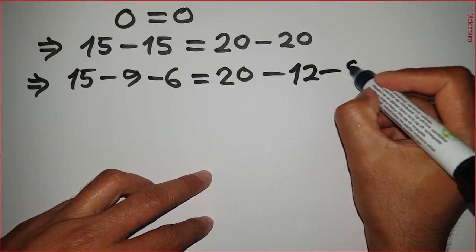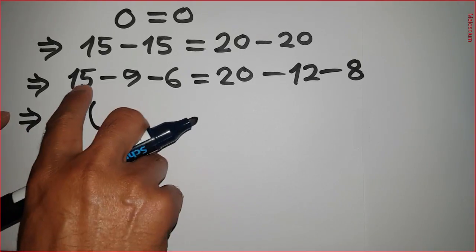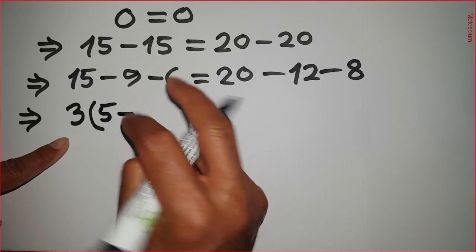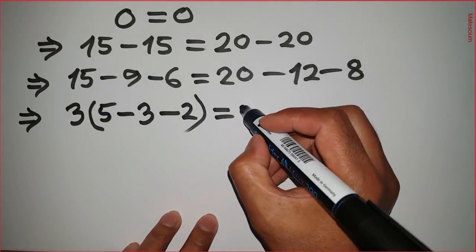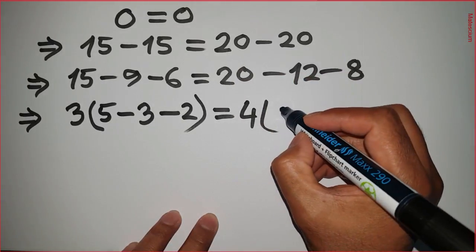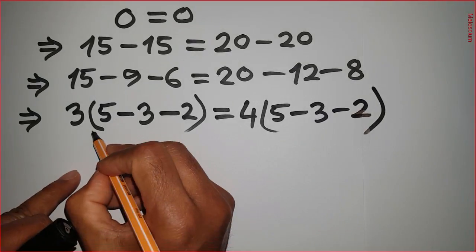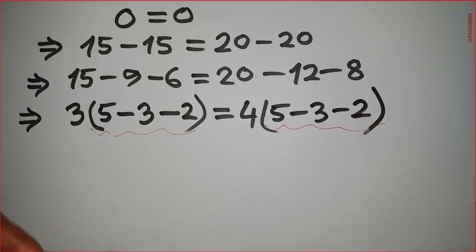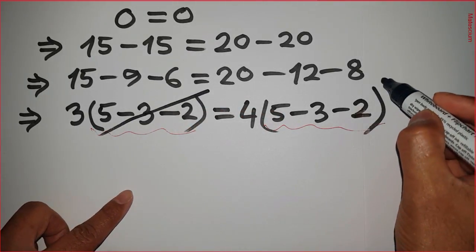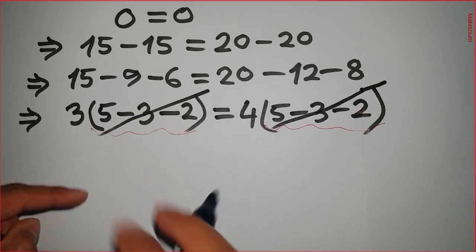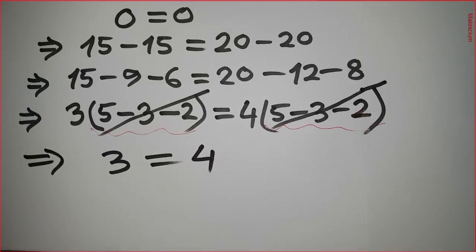This 20 remains the same, and that 20 can be rewritten as minus 12 minus 8. Next, I take 3 as common factor from the left-hand side: 3 times (5 minus 3 minus 2). Then I take 4 as common factor from the right-hand side: 4 times (5 minus 3 minus 2). The part in parentheses on the left-hand side and that part on the right-hand side are the same, so I can cancel them from both sides simultaneously, and the remaining is 3 on the left and 4 on the right.